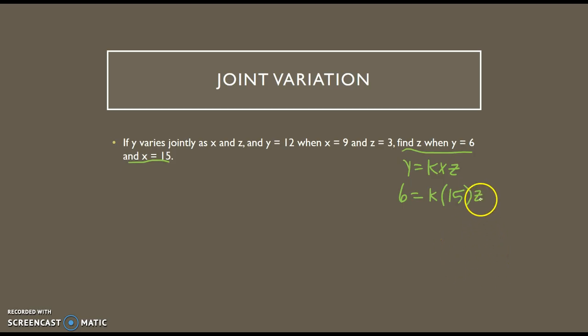Well, right now I cannot solve for z because this k is in there, so I need to find that constant of variation. Then I can solve for z. So to find the constant of variation, I'm going to come back to the first part of the sentence, or the middle in this one, where it tells me what all three variables are at that time. So then I'm going to say y equals kxz, y is 12, looking for k, x is 9, z is 3.